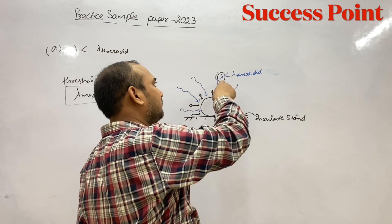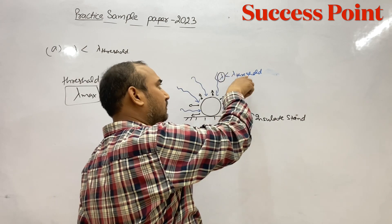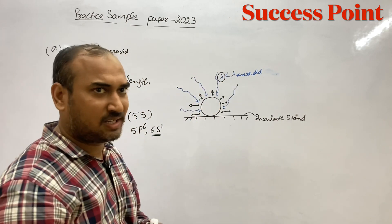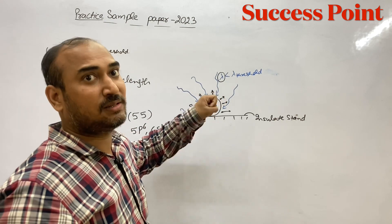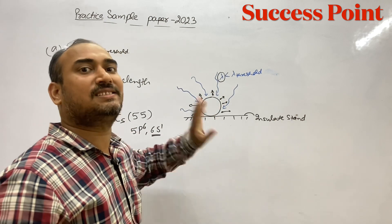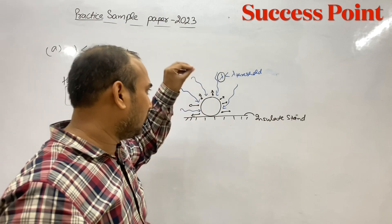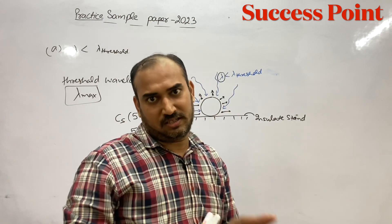तो जब किसी metal के sphere से सारे valence shell के electrons निकल जाएंगे तो फिर अंदर वाले electrons नहीं निकल पाएंगे। इसका मतलब यह हुआ कि photoelectric effect रुक जाएगा। इसलिए अगर हम किसी sphere पर light डालेंगे जिसकी wavelength threshold wavelength से कम है, तो कुछ देर तक electrons निकलेंगे और उसके बाद जब सारे valence shell के electrons खत्म हो जाएंगे तो emission बंद हो जाएगा।